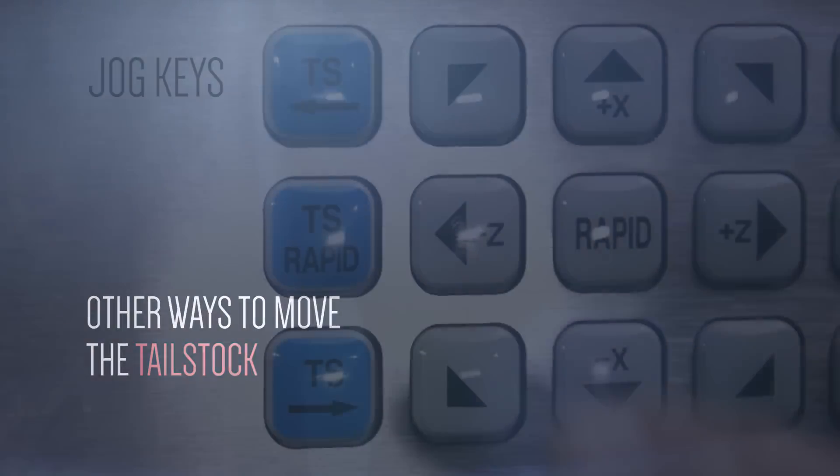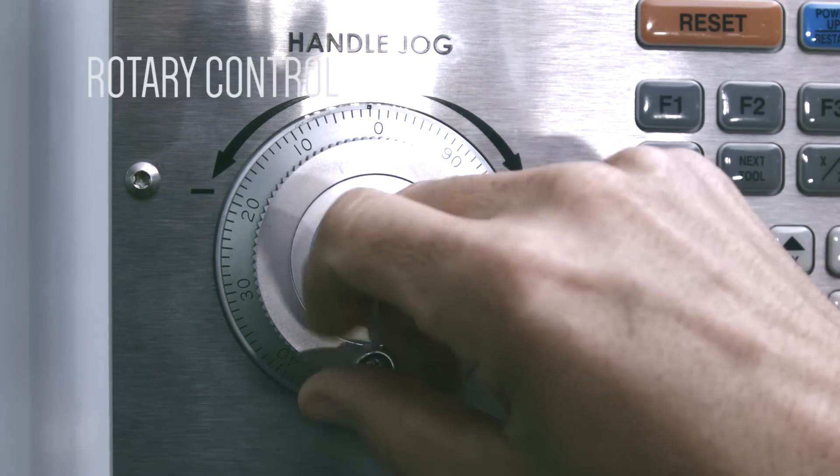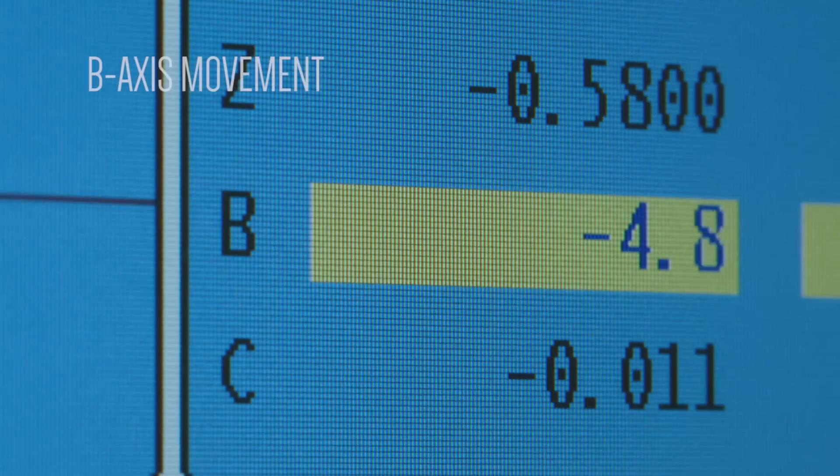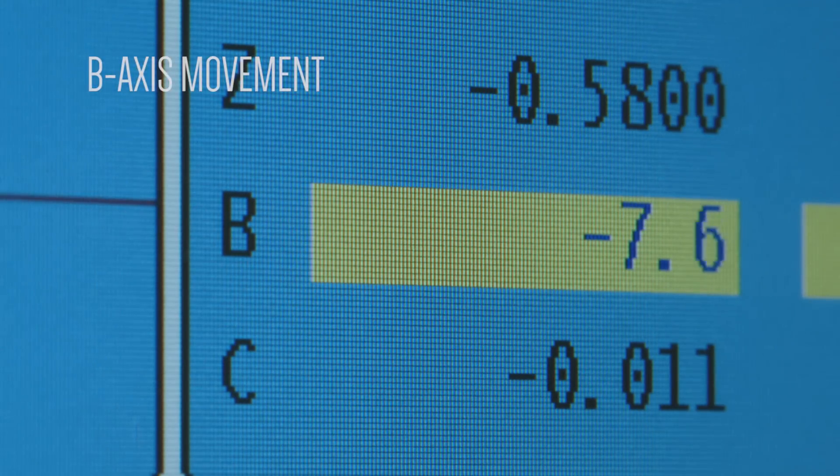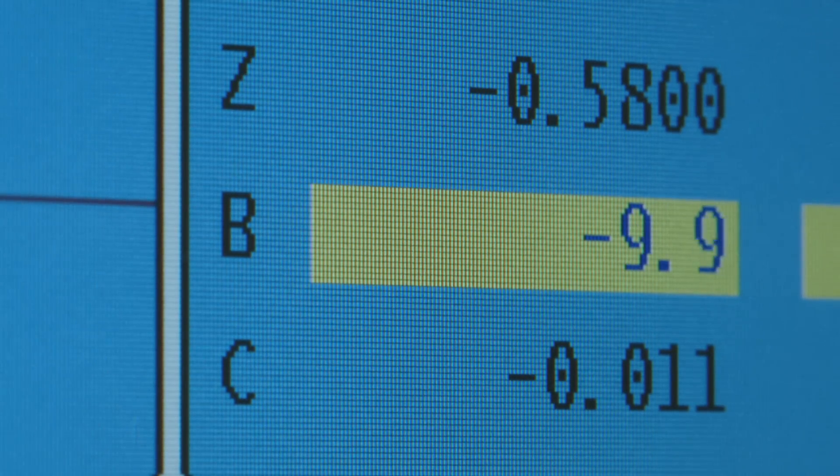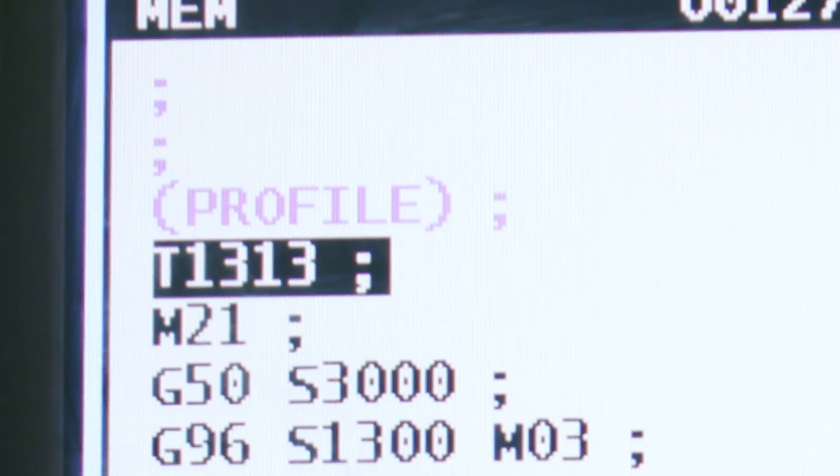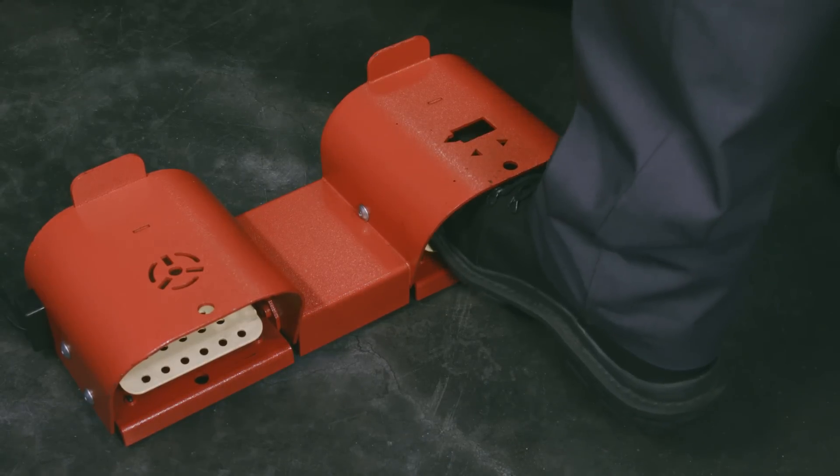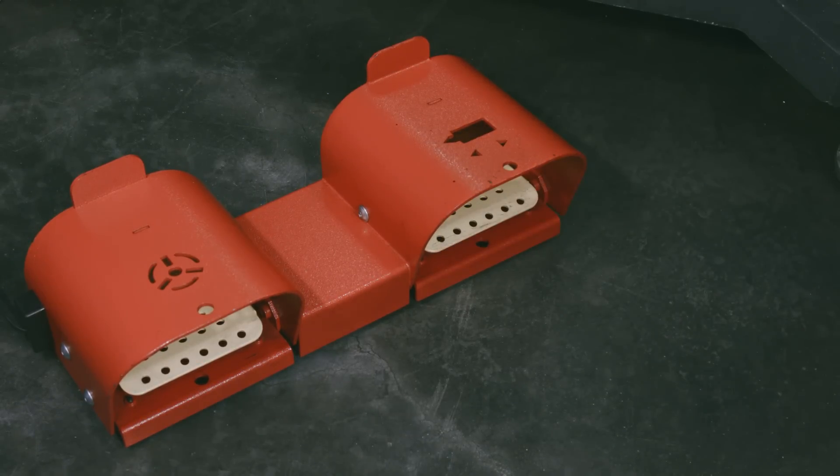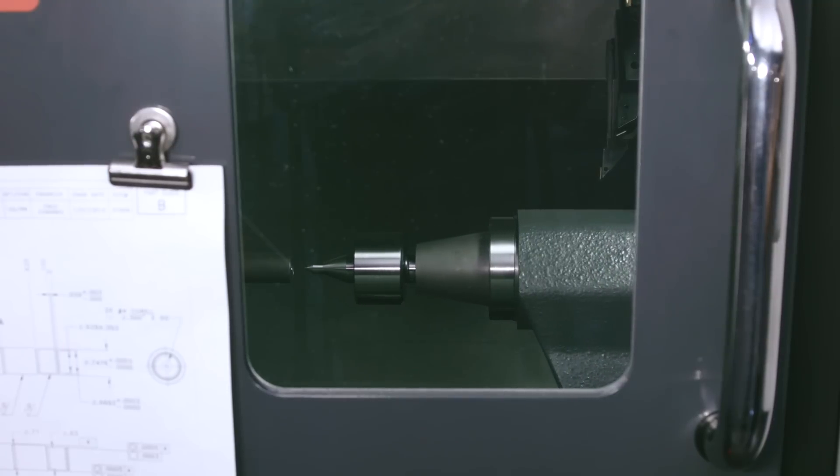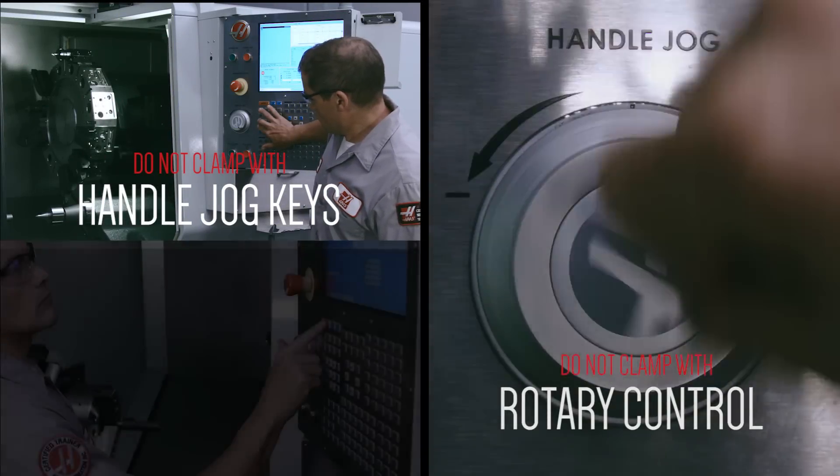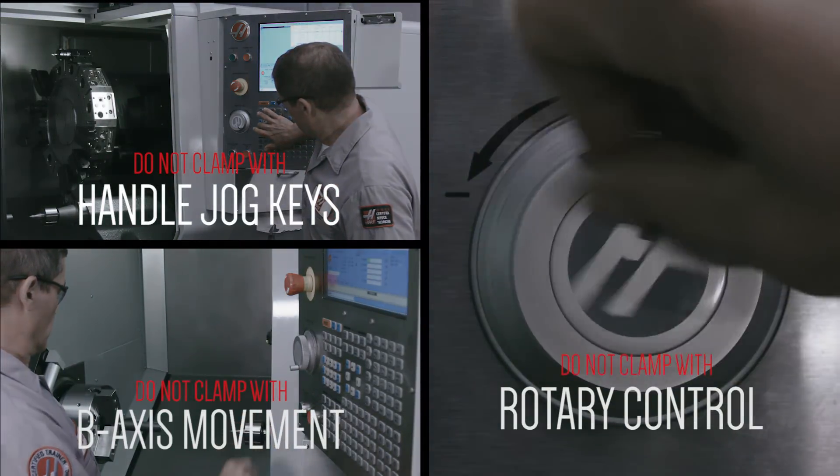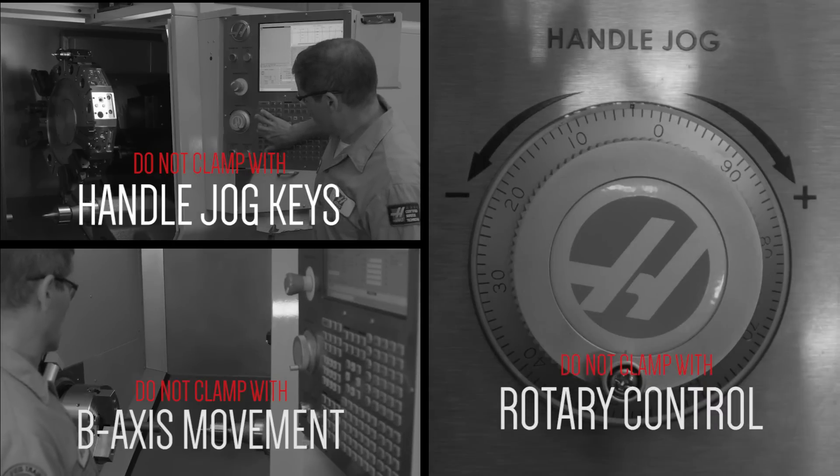And there are several other ways to move the tailstock. You can use the tailstock jog keys, handle jog the B axis, or command a B axis move. But none of these should ever be used to clamp the part. To clamp your part during machining, use only the M21 command or the foot pedal to initiate the M21 move. This is the only acceptable way to clamp your part. Using the handle jog keys, the rotary control, or commanding a B axis move will not maintain full clamping pressure during cutting.